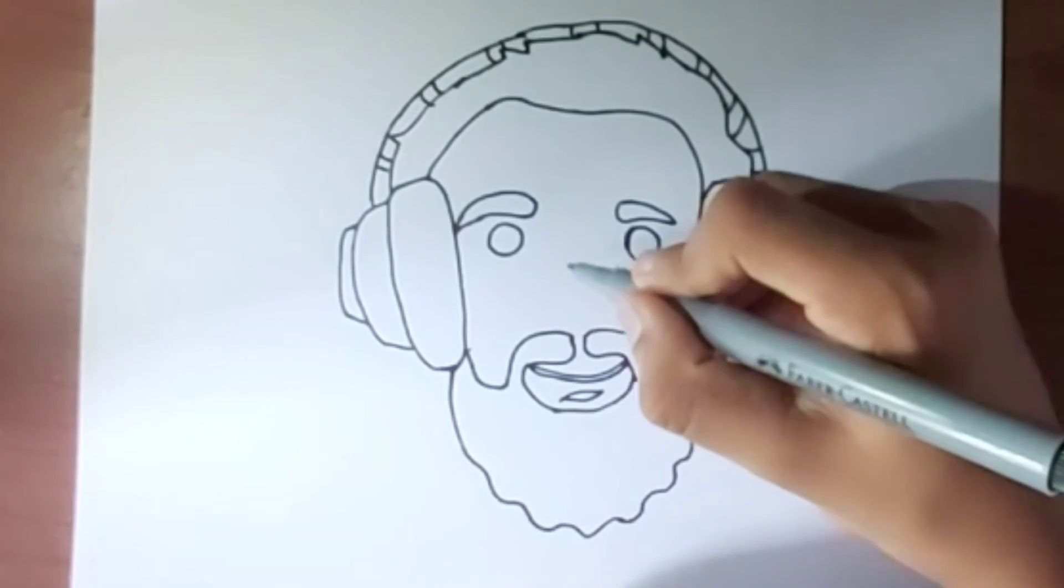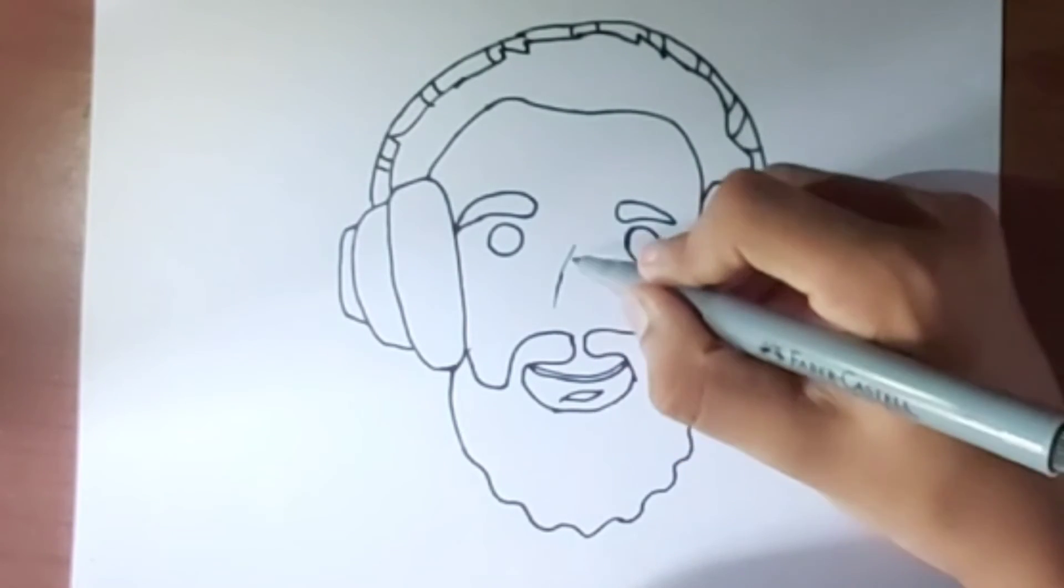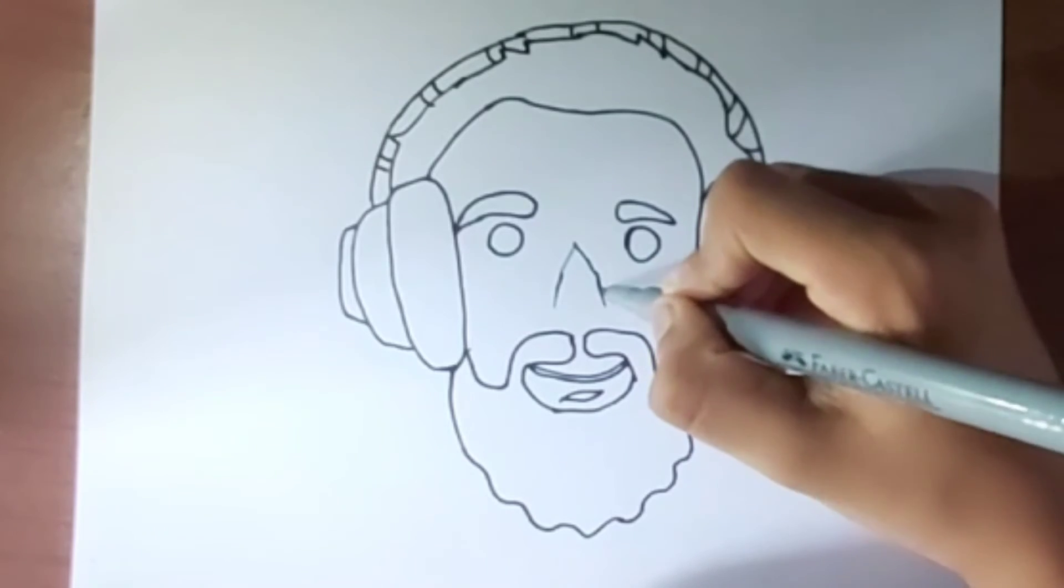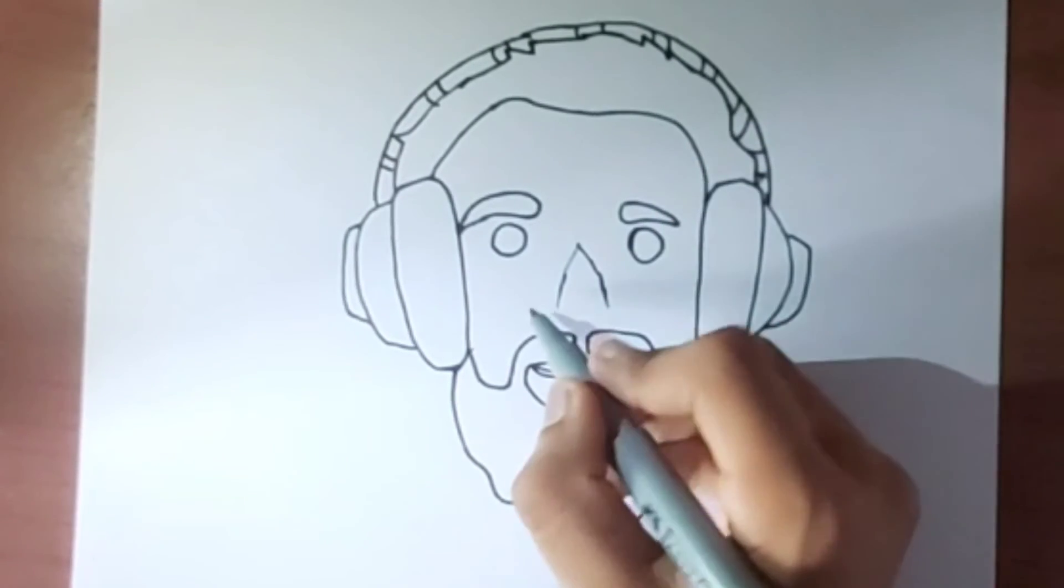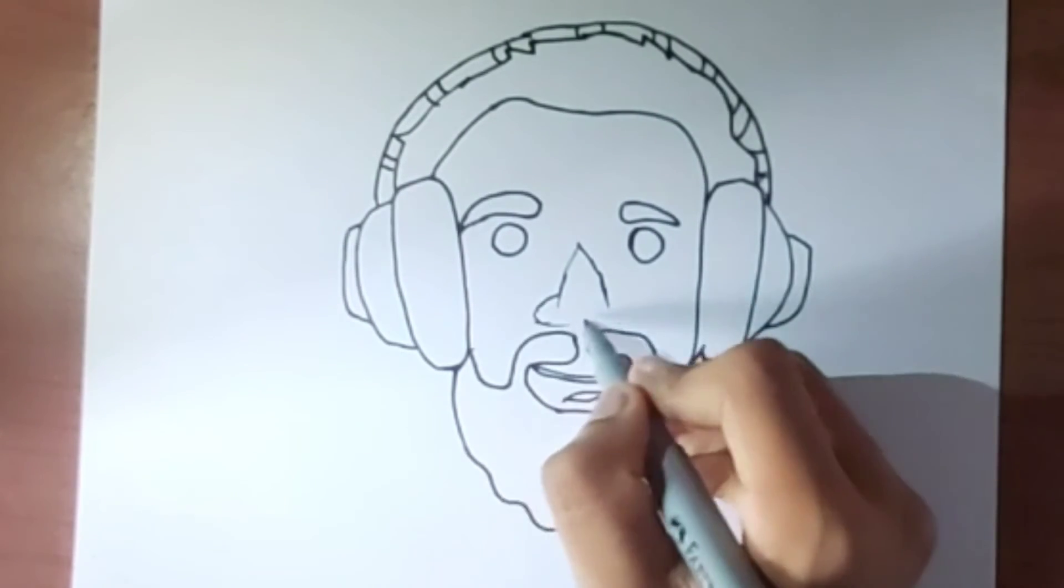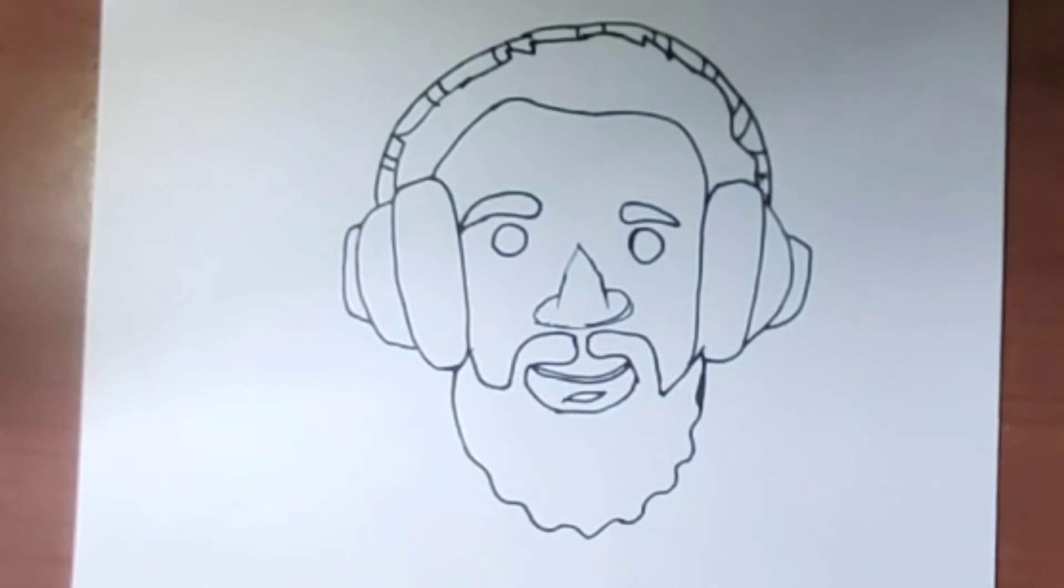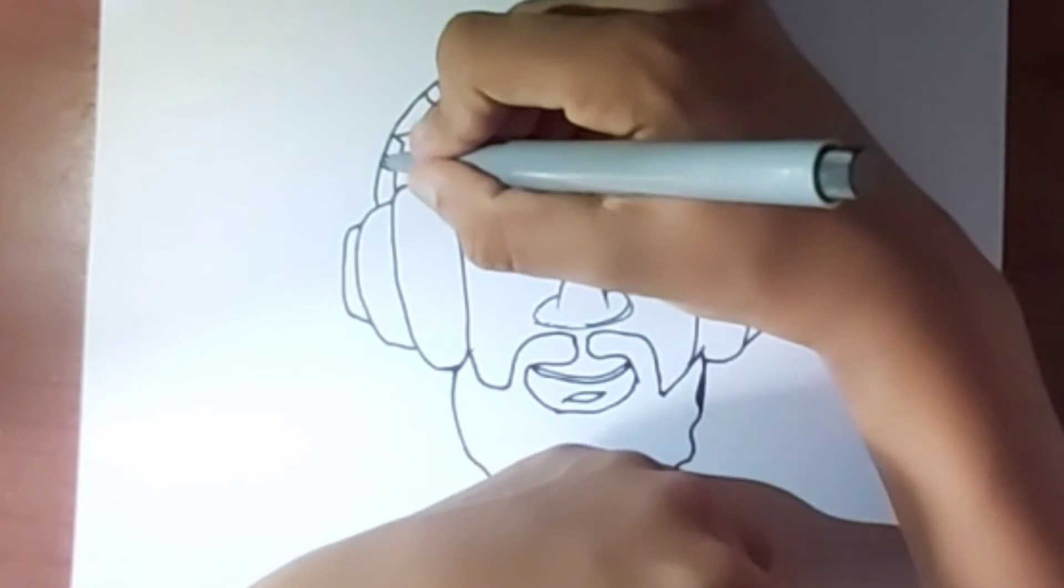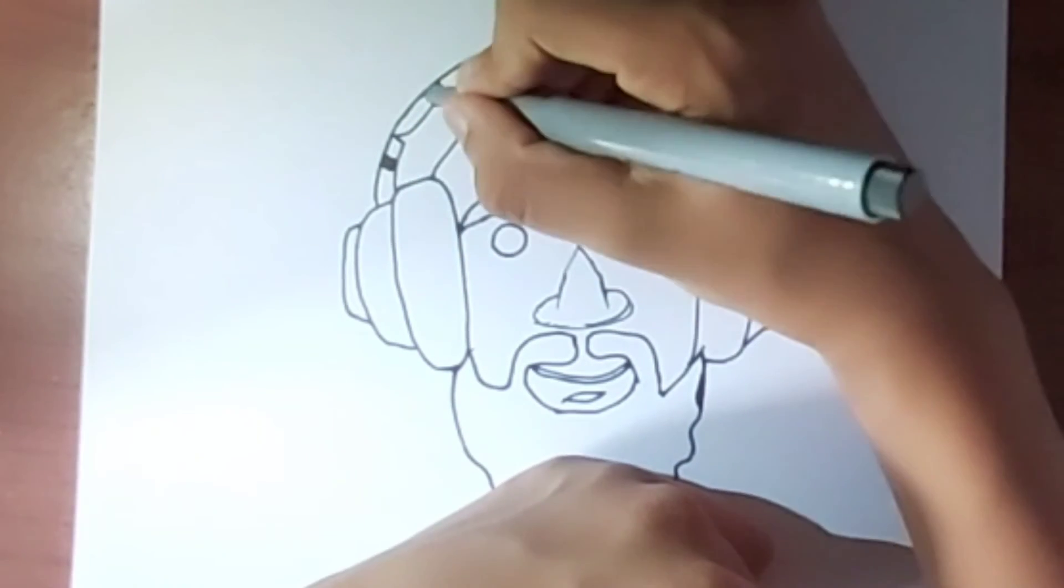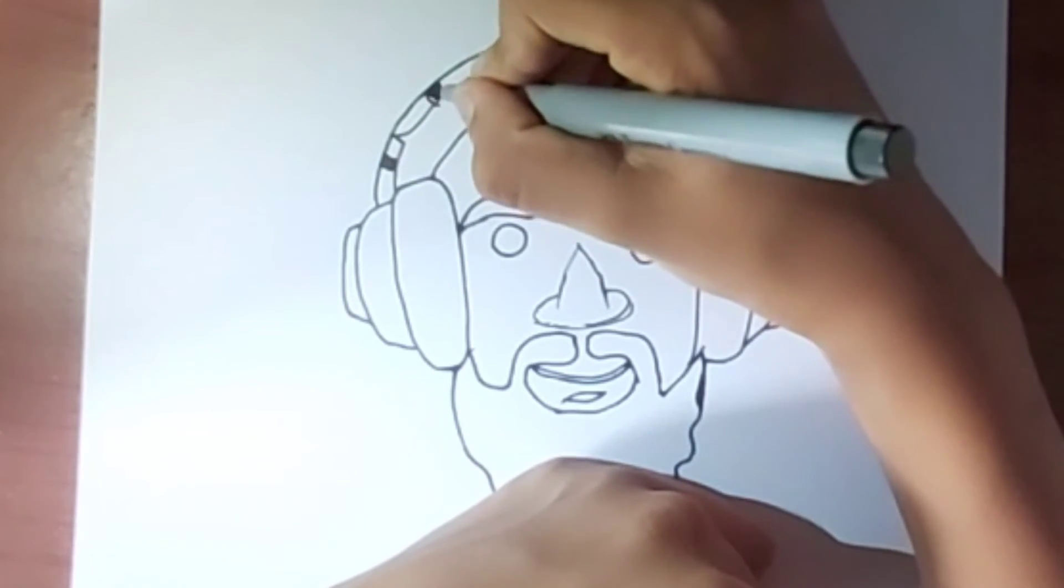Now we end with drawing the nose, and a little more cartoony, and like that. Now we'll color inside these lines with dark and black.